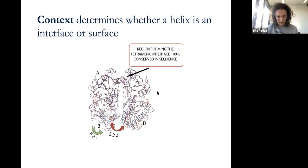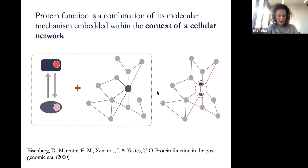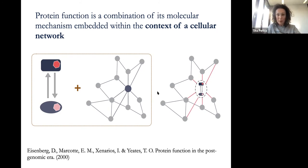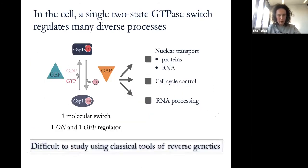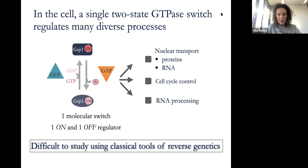For my postdoc I stayed with the theme of the importance of context, focusing on protein function. Protein function is a combination of its molecular mechanism — which we can study biochemically in a buffer — but that mechanism is also embedded in the context of the entire cellular network. I found a very interesting case study: a small GTPase protein that exists in two states, a very simple two-state switch that nevertheless performs many essential roles in the cell.